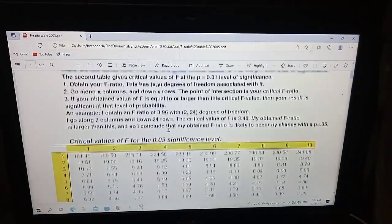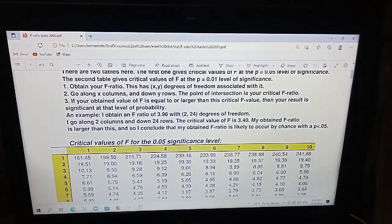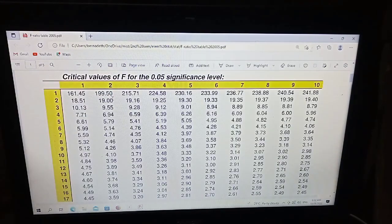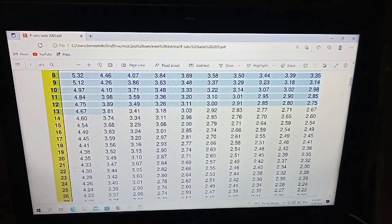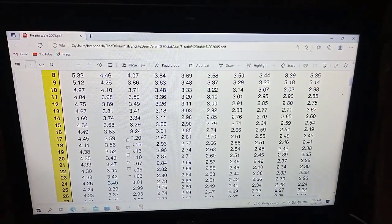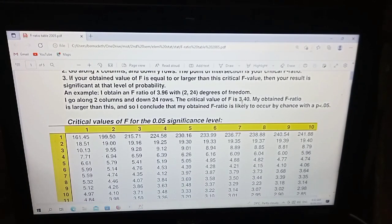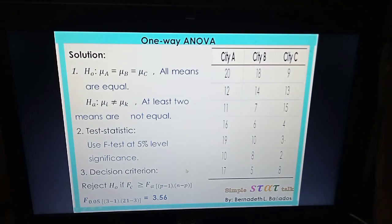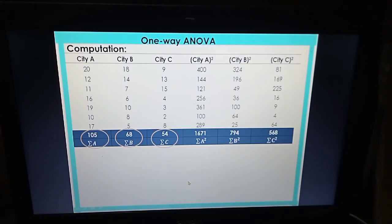In case you forget how to get the value from the table, there's a guide. An example is shown. If 2 and 24 are the degrees of freedom, you match 2 with 24, and get 3.40. That's shown in the example as well. So don't worry, there's a guide in the table. Going back to our problem, we have our critical value which is 3.56. We are now going to compute the values.